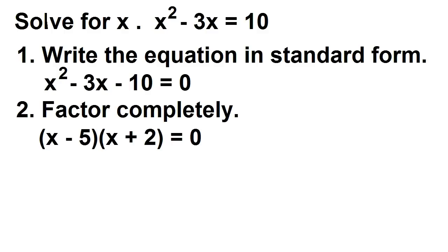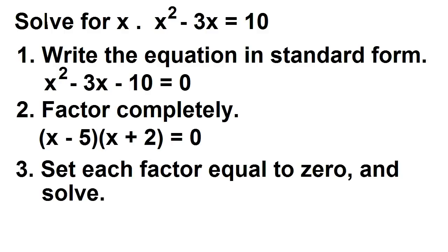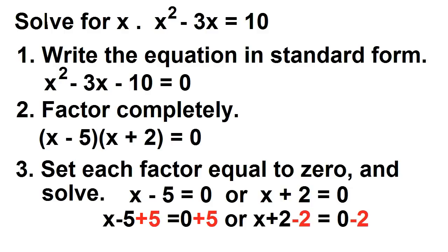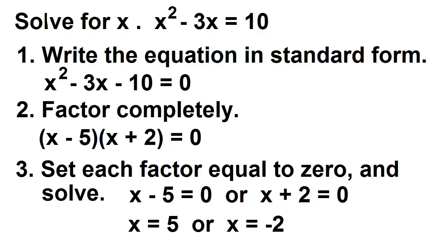Our equation is now (x − 5)(x + 2) = 0. Set each factor equal to 0 and solve: x − 5 = 0 or x + 2 = 0. Using the properties of equality, x = 5 or x = −2.